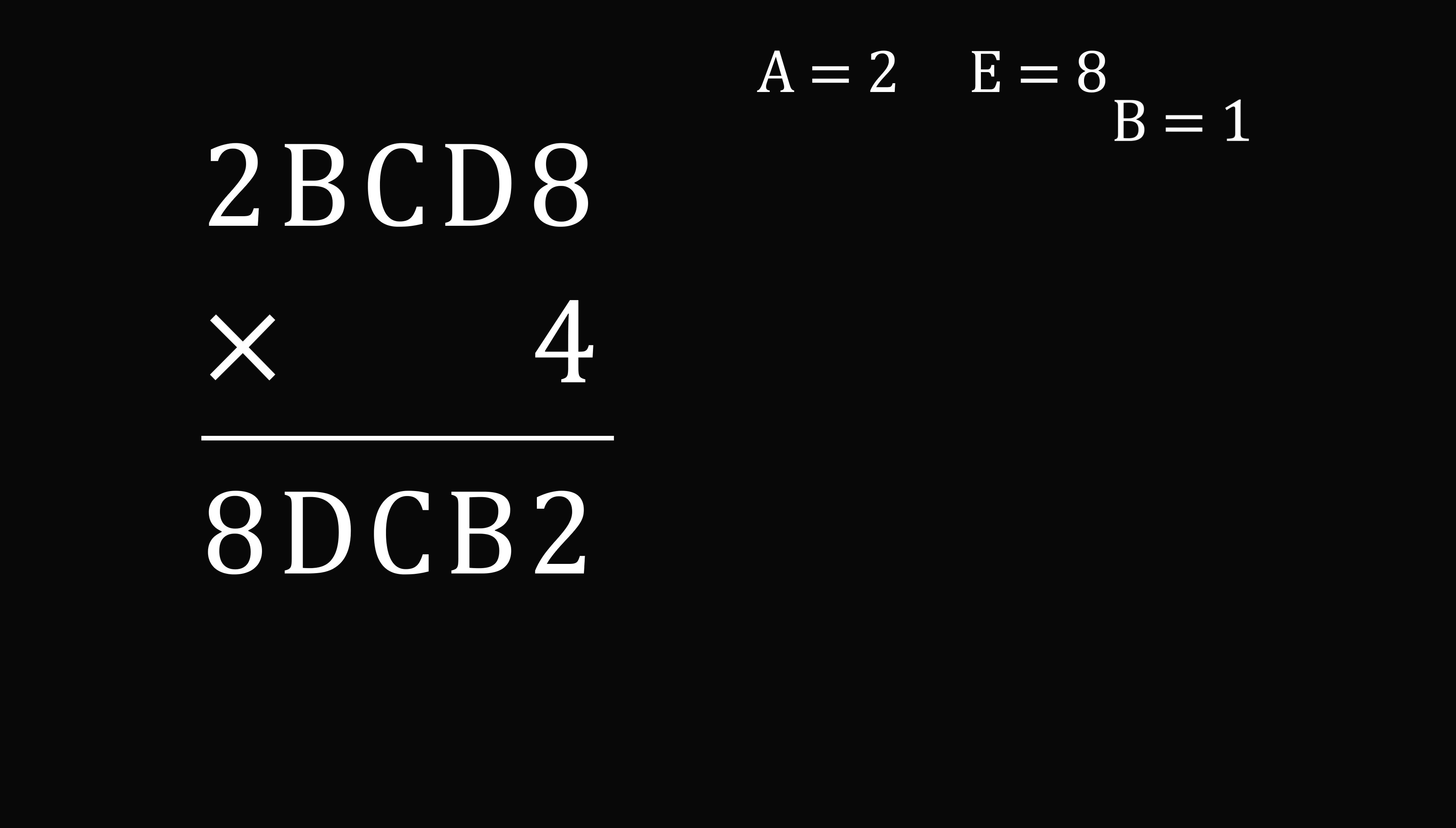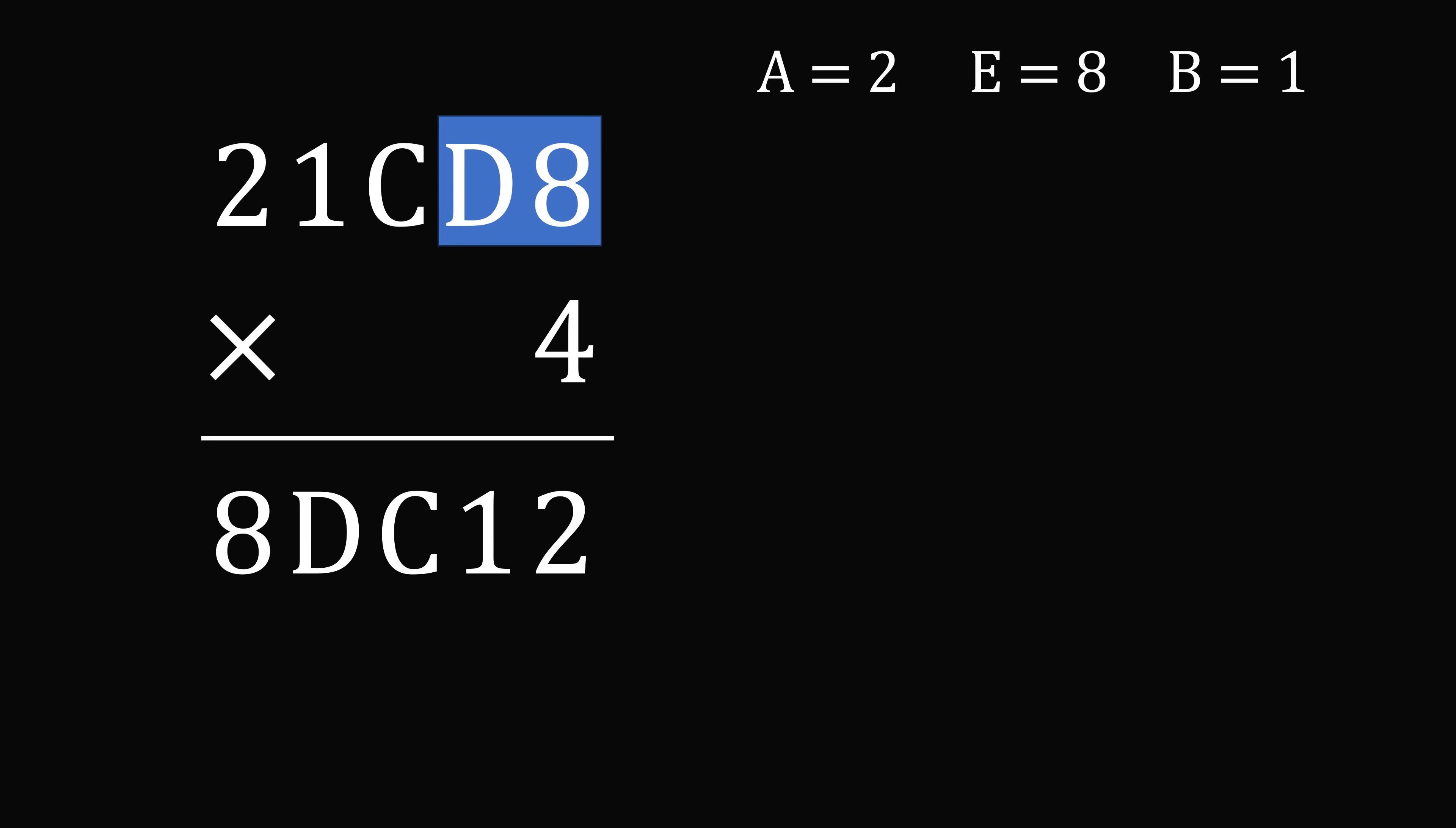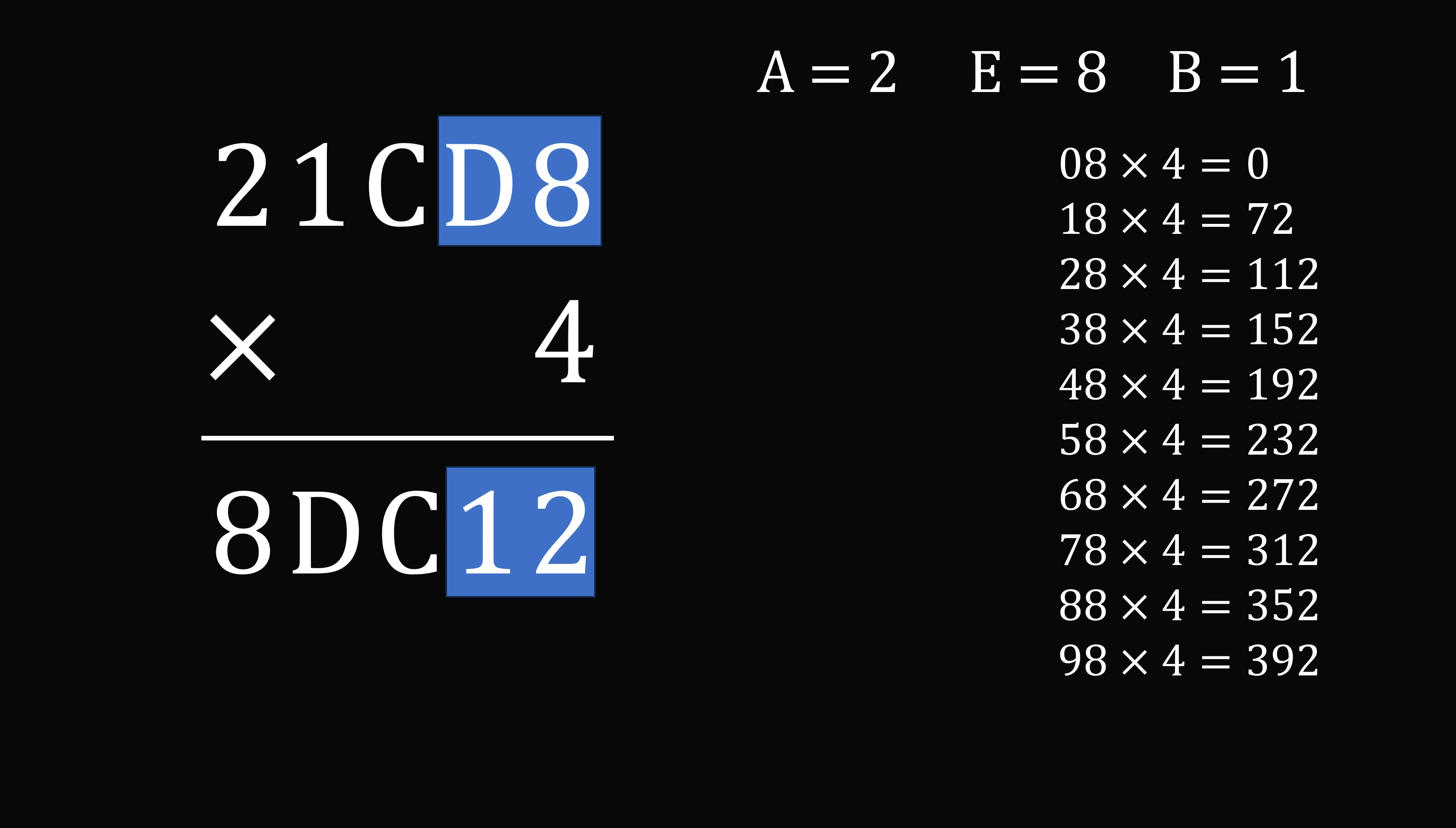Let's put in B is equal to 1. We now have D8 multiplied by 4 is some number that ends in 12. So let's look at all of the possibilities. One case is 112. In that case D would be equal to 2. Then we have 312. In that case D would be equal to 7. So D is either 2 or 7. But we already have that A is equal to 2. So D cannot be equal to 2. And that means D is equal to 7.